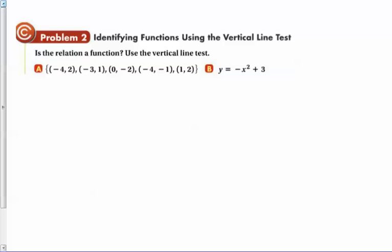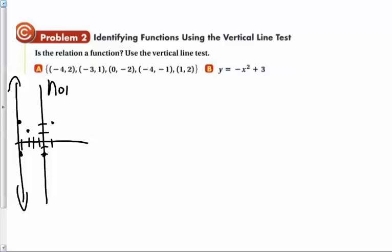Talking about vertical line test. These are both relations, but are they functions? We can use the vertical line test here. Let's go ahead and graph negative four, two, up to one, two, and I put a dot. Then I go to negative three and then I go up one and I put another dot. Zero, negative two, put a dot. Then negative four, one, two, three, four, down to one. I put a dot and then one and then up to two, one, two. This guy right here is the vertical line. So this is not a function using the vertical line test.